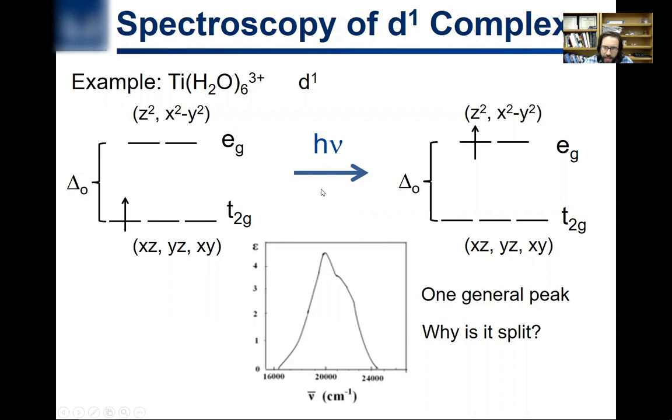And if you shine light on it, very simply what you'd expect is that you get one peak because there's one gap here, this delta O, that's in the visible spectrum. And indeed, that's generally what you see. You see one peak in the UV-vis spectrum of this titanium, this d1 complex.